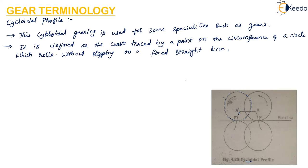The next one is the cycloidal profile. It is defined as the curve which is traced by a point on the circumference of a circle which rolls without slipping on a fixed straight line. The cycloidal profile is generally used for some specialties like clocks. That is all about the profiles of the gear teeth.